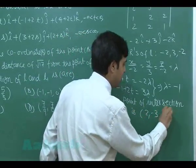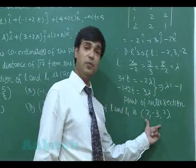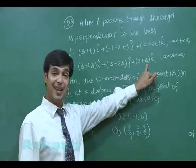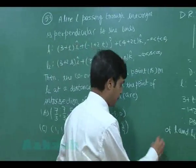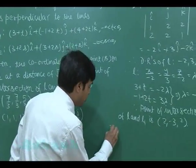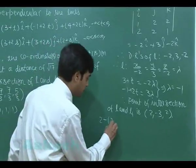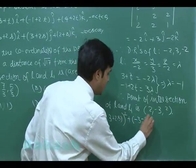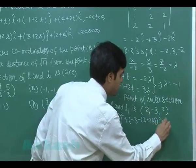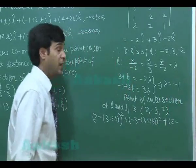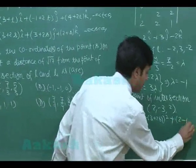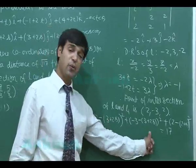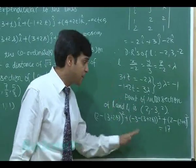The point of intersection is (2, −3, 2). A general point on L2 is (3+2s, 3+2s, 2+s). Setting the distance from (2, −3, 2) to this point equal to √17: (2−(3+2s))² + (−3−(3+2s))² + (2−(2+s))² = 17.